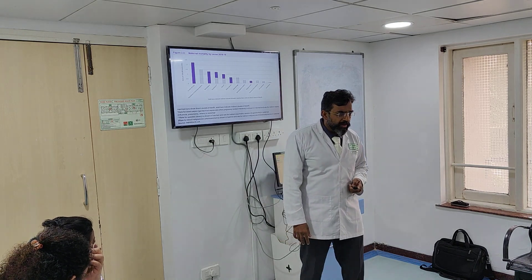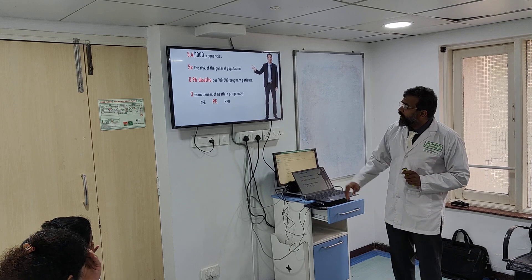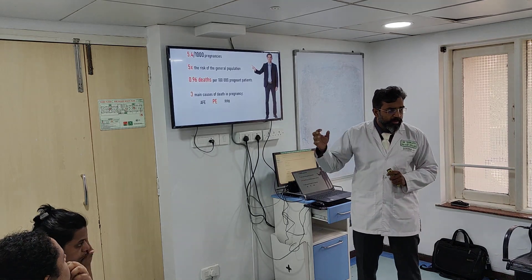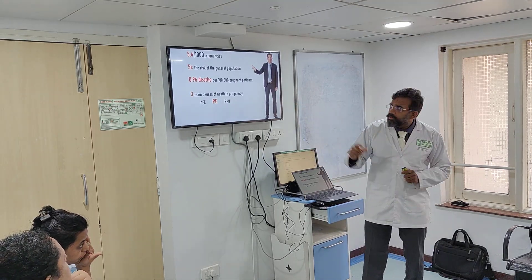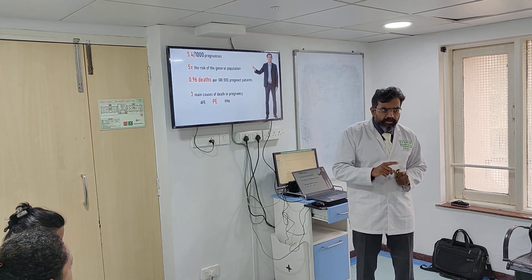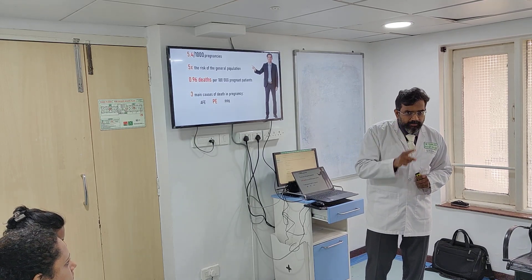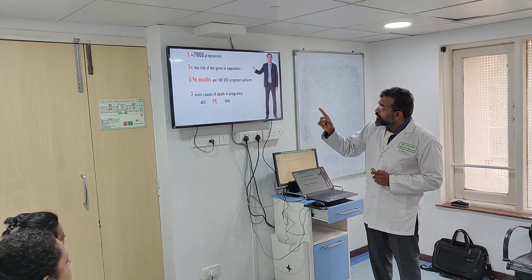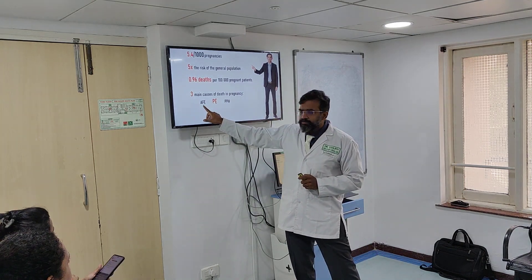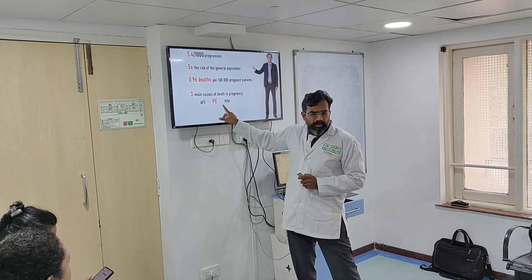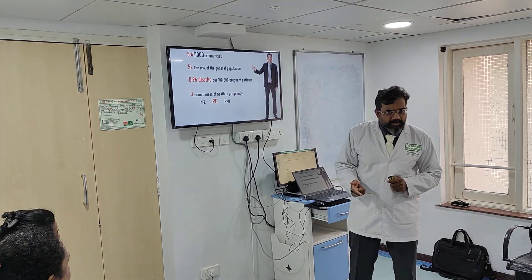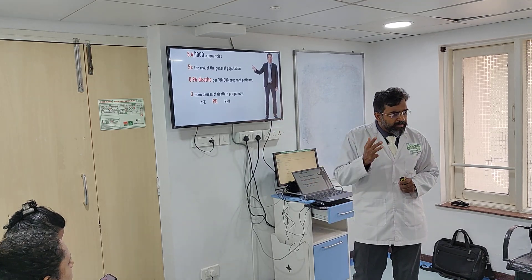Some important facts: 5.4 per 1,000 pregnancies have an embolism — a very big number. When we talk about peripartum cardiomyopathy, it's 1 in 10,000, but this is 5.4 per 1,000 pregnancies. That's five times the risk of the general population. There are 0.96 deaths per 100,000 pregnant patients. The three main causes of death in pregnancy are amniotic fluid embolism, pulmonary embolism, and postpartum hemorrhage.